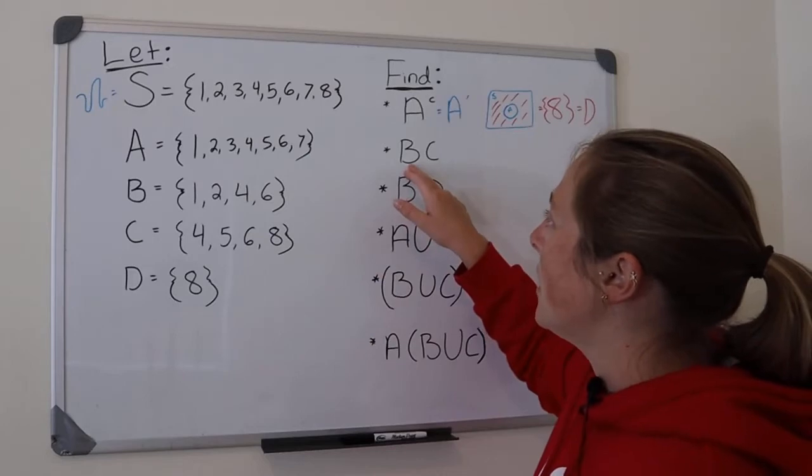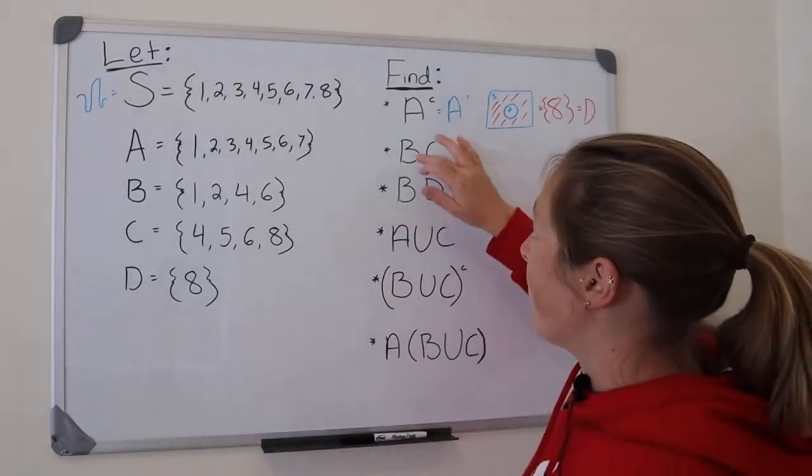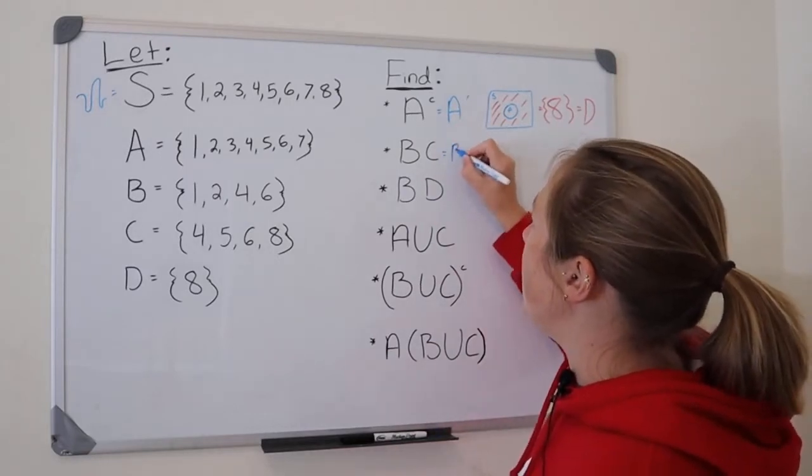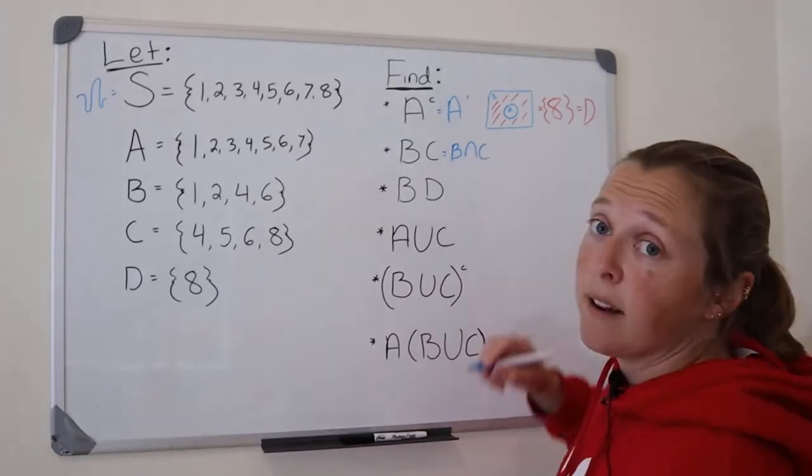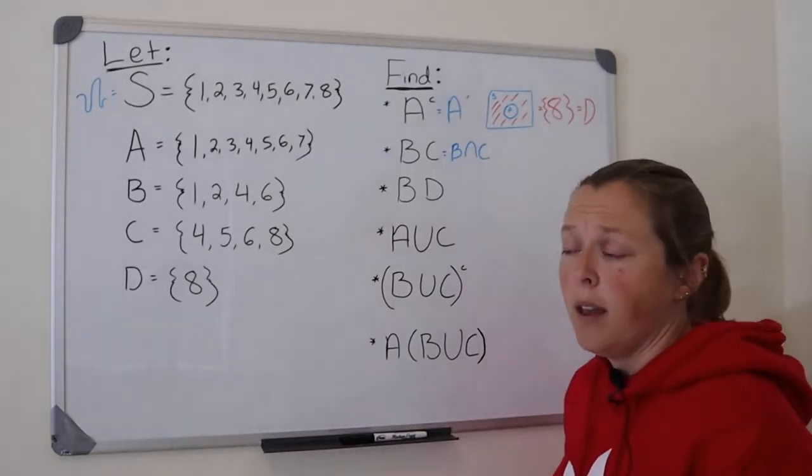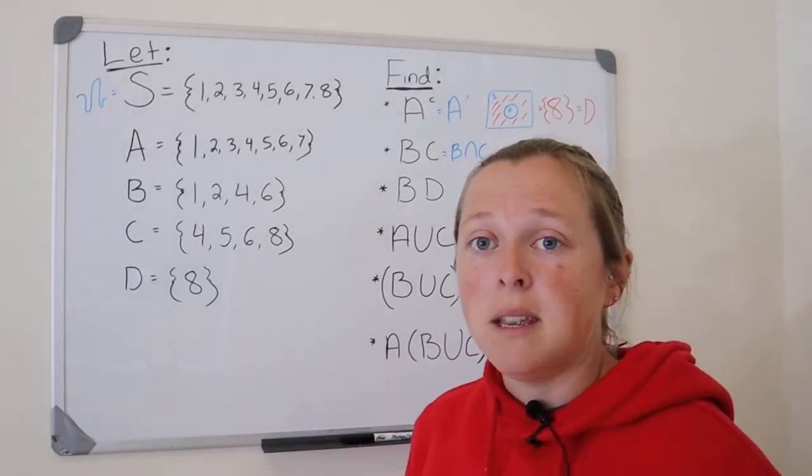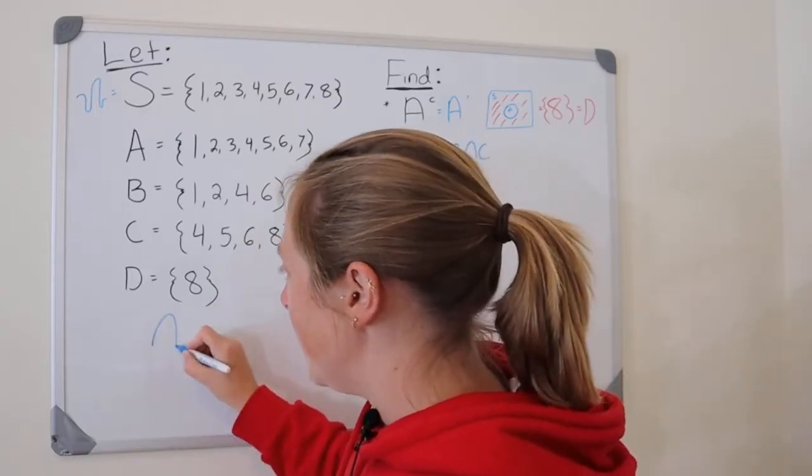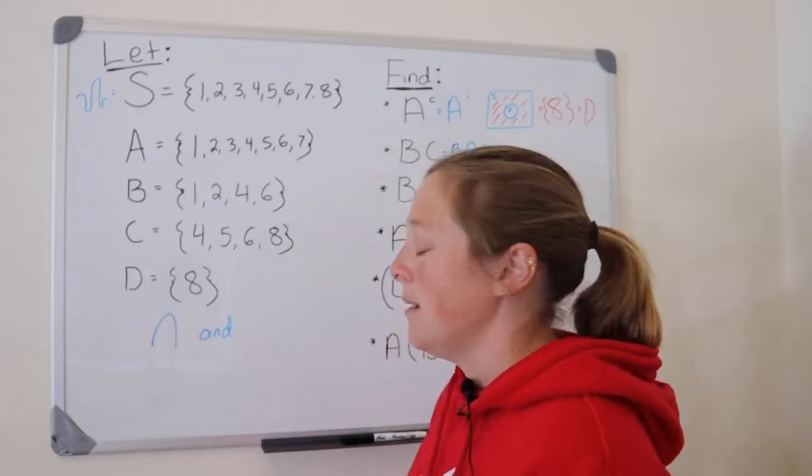Next, moving on to B intersection C. Now, I know I didn't write that intersection sign. So B intersection C, that upside down U means intersection, and a lot of times, a lot of stations will just omit it. What does intersection mean? It means and. This is intersection, and it means and.